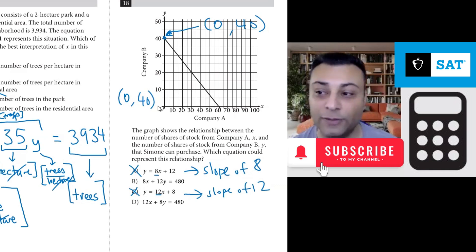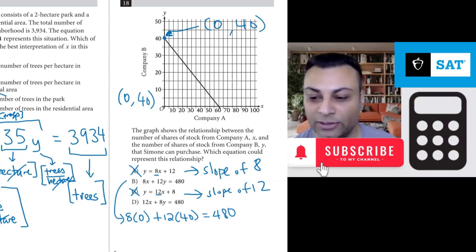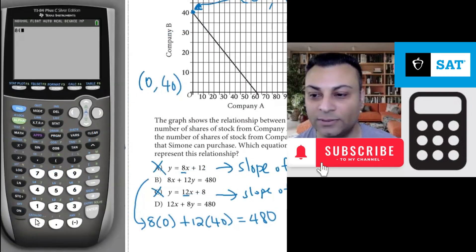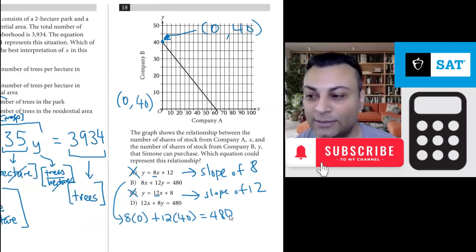So when I plug in 0 for x, I should get 40 for y. And I'll do b, so you can see 8 times 0 for x plus 12 times 40 for y. And you get 480. I'm just writing out the equation from b. That's what I'm doing. This is 0 plus 12 times 40. Let's use the calculator. Because you can use the calculator, so always good to use it. 8 times 0 plus 12 times 40. It's 480. Okay. That is correct. That works.